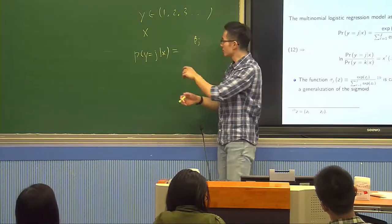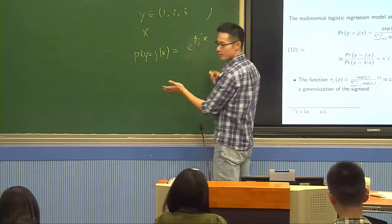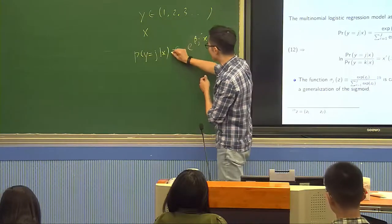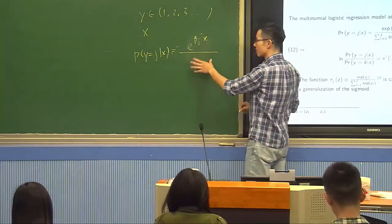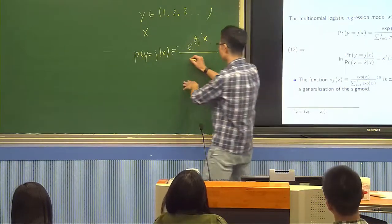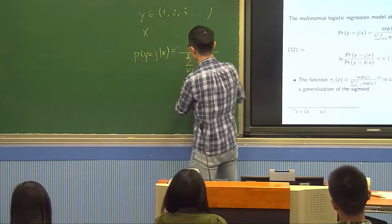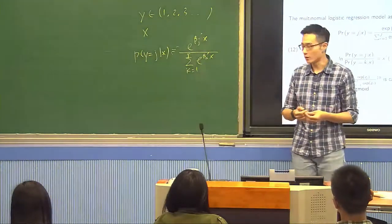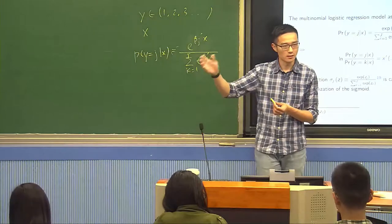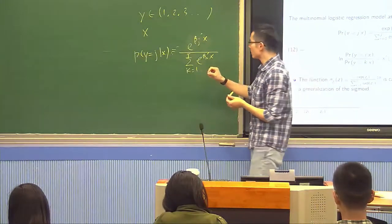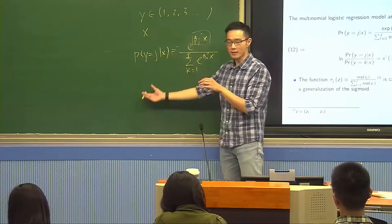So for each different choice, I'm going to have a different beta j. So beta j prime x, and then e to the beta j prime x. For binary, we can think about the probability as proportional to this. In reality, it equals e to the beta j prime x divided by the sum of all e to the beta k prime x, where k goes from 1 to j. We add all of them together so everybody's between 0 and 1.